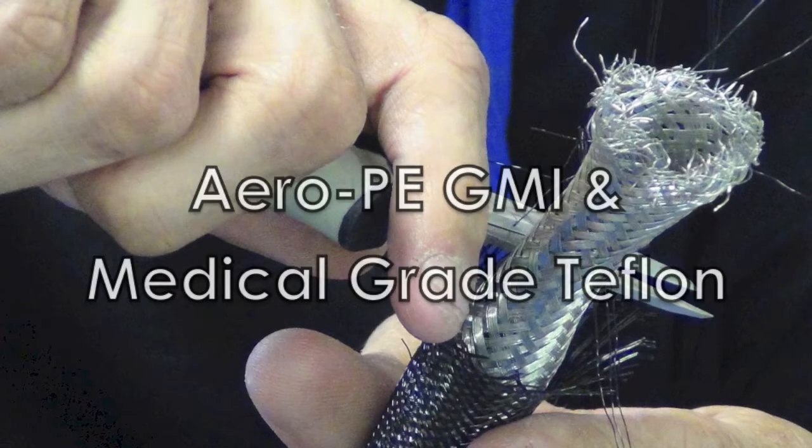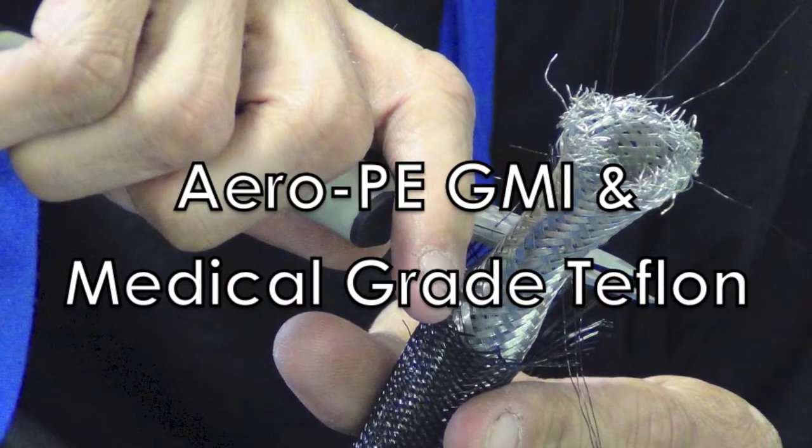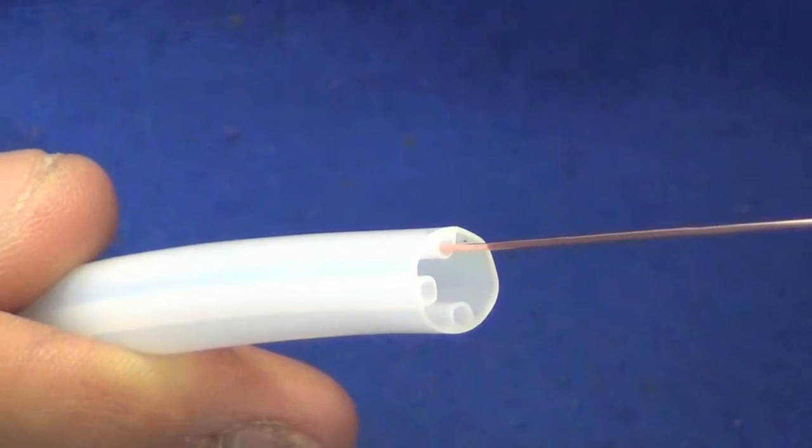Tara Labs Dielectrics. Tara Labs uses a combination of premium Aero PE, GMI, and medical grade Teflon when constructing their dielectrics.